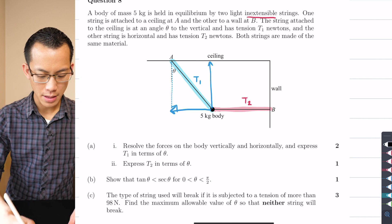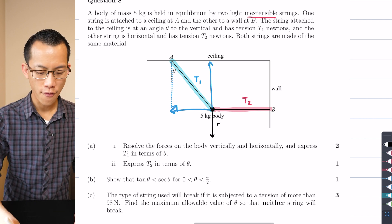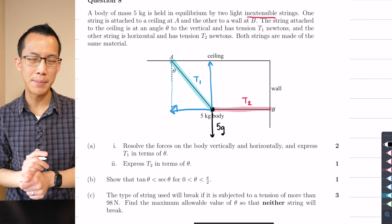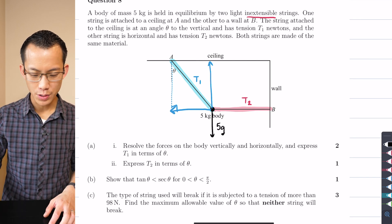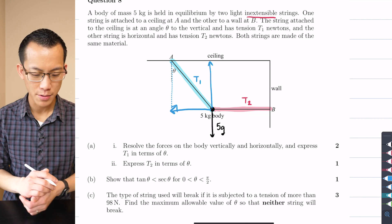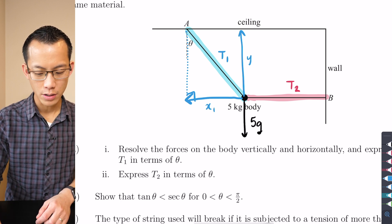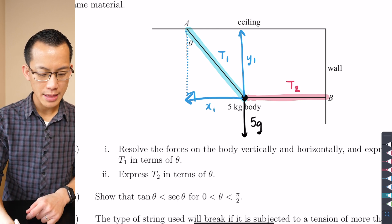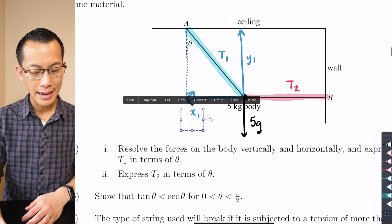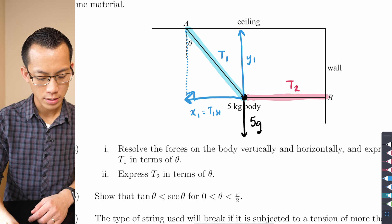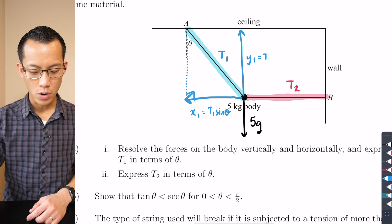I'm going to create a right angle triangle. There's a five kilogram mass being pulled down at mg, which in this case is 5g. They haven't specified a value for g just yet, but there are clues later. Using basic trigonometry, if that's theta in this corner, I'll call the horizontal component x1 and the vertical component y1. Sine of theta is opposite over hypotenuse, so x1 equals T1 sin theta. And y1 is going to be T1 cos theta.